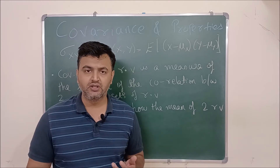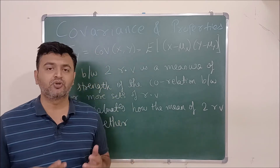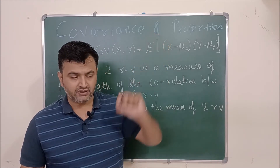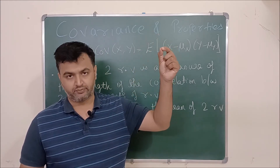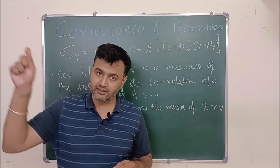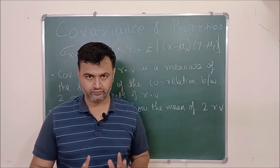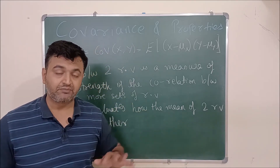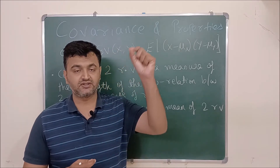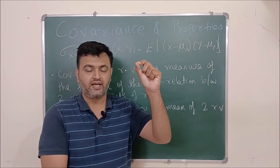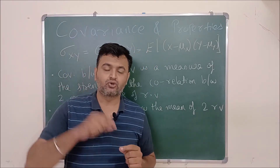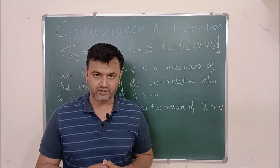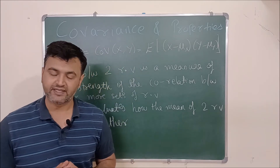If the covariance comes out to be positive, one can conclude that if stock A price will go up, then stock B price will also go up. Or if stock A price will come down, then stock B price will also come down. If the covariance comes out to be negative, that means they're inversely proportional — if stock A is going up, then stock B will go down, and vice versa. So knowing the sign of covariance is very important; it tells us the behavior of the random variables.